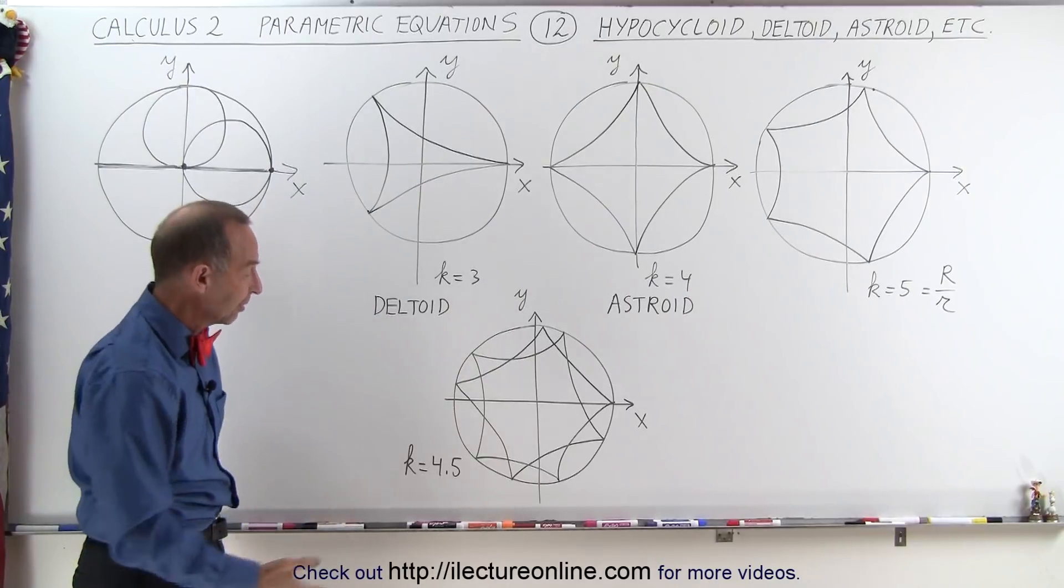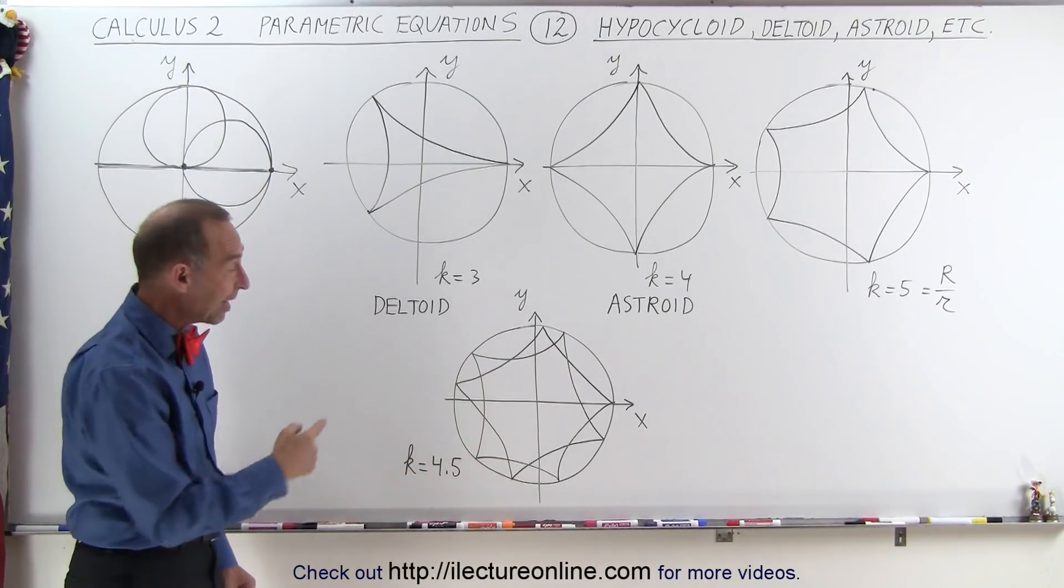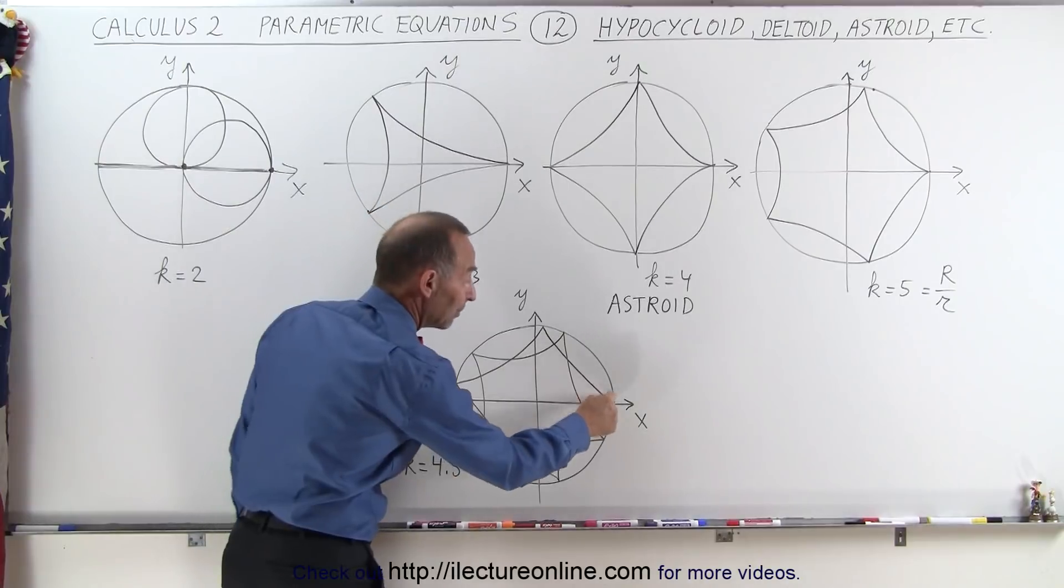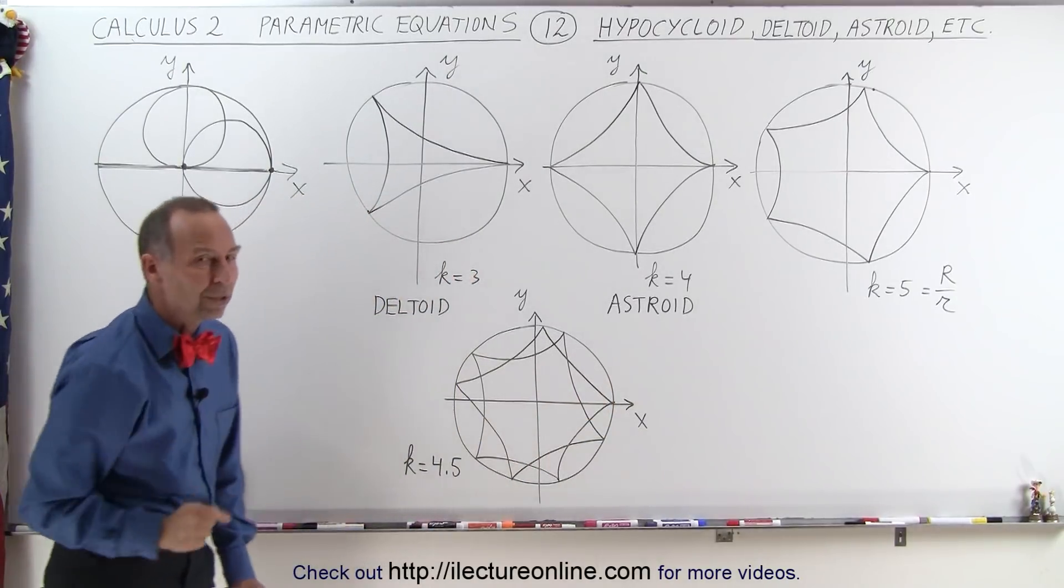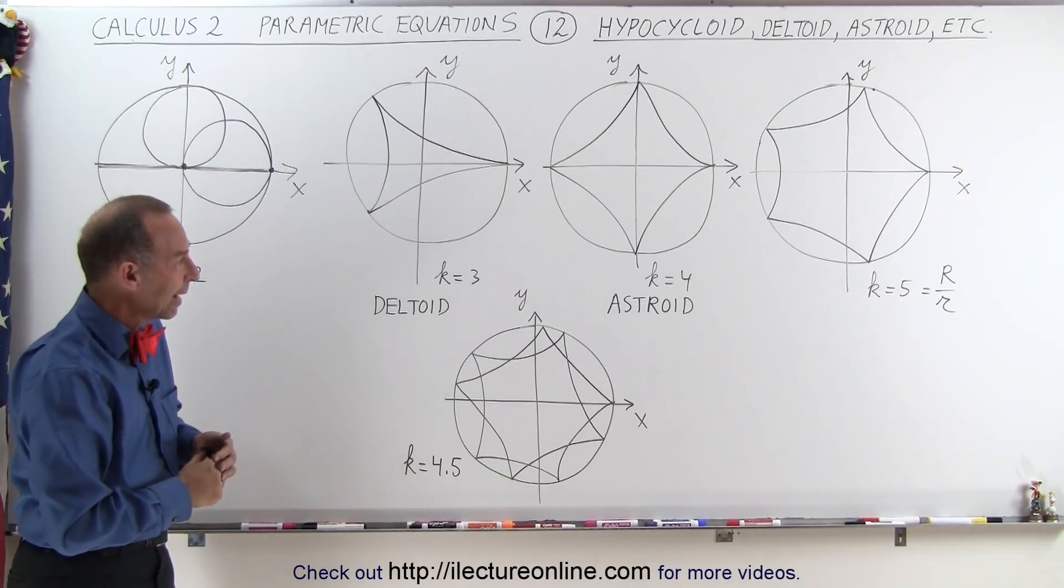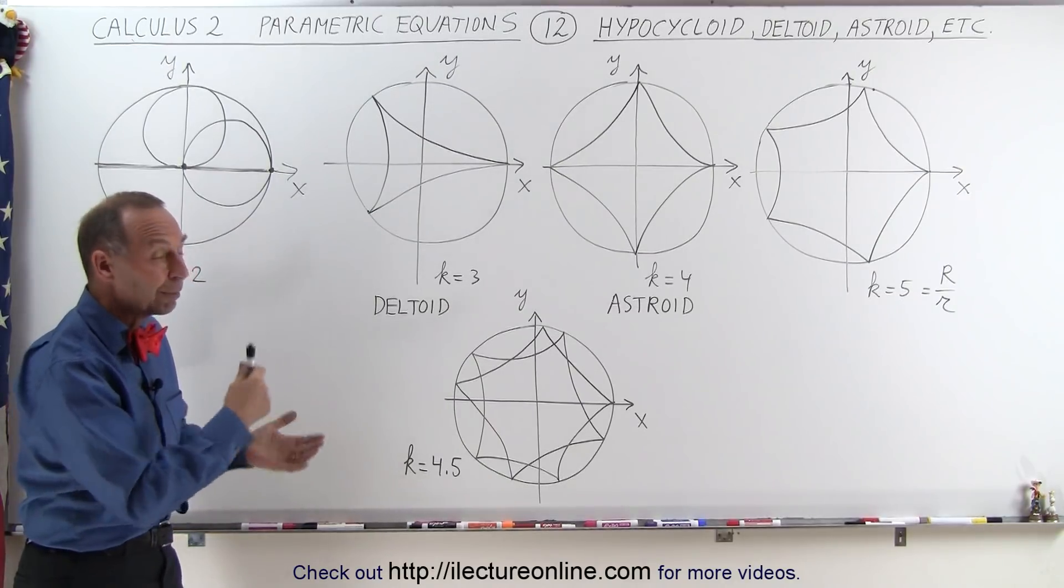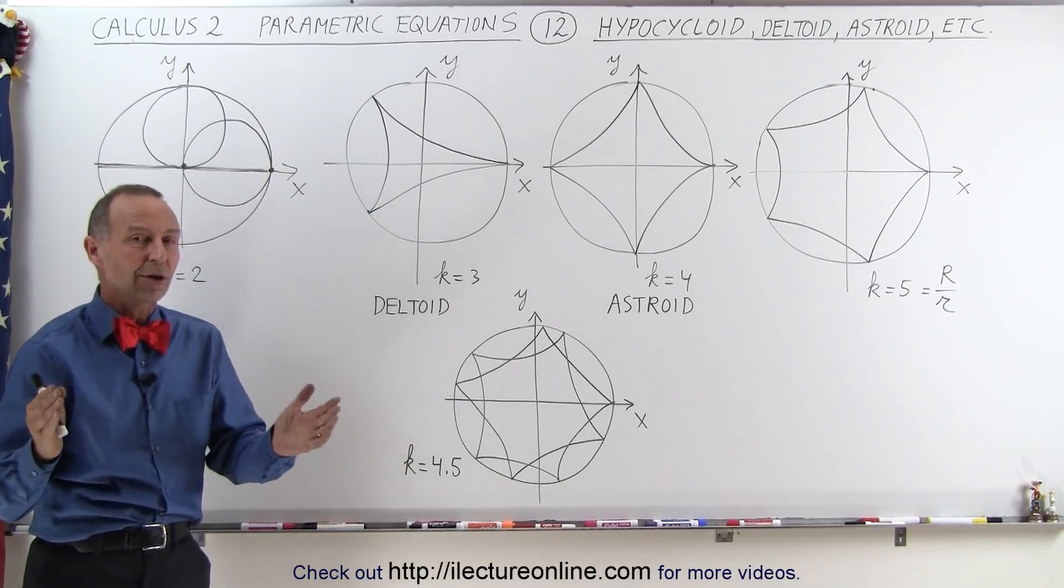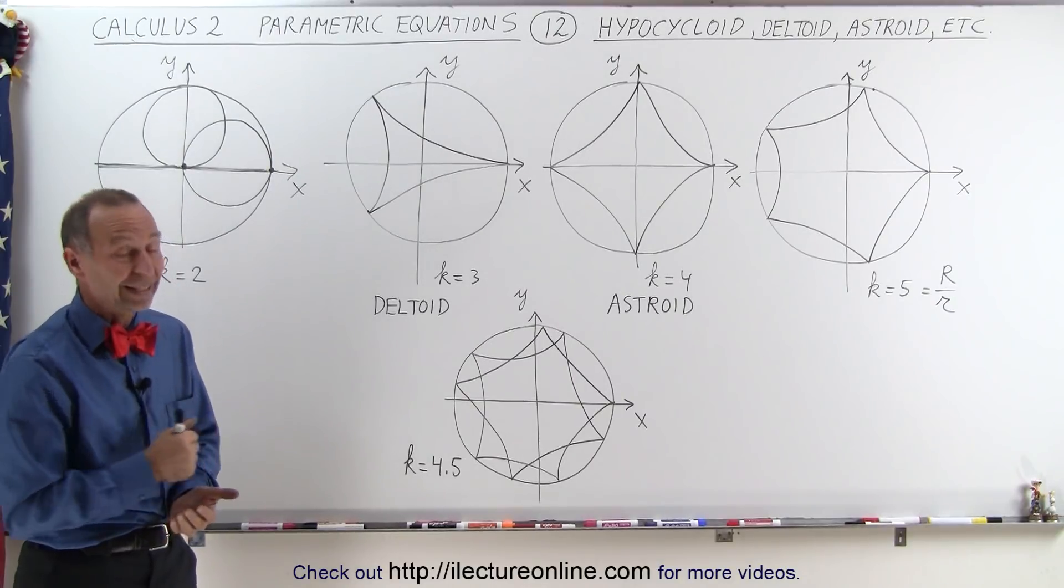And you can imagine that if it's, for example, 4.2, you'd have to go around five times before you end up back at the same place that you started with that point on the edge of the small circle. But here you get kind of a feel of what the various hypocycloids look like, depending upon what the ratio is between the large and the small circle. And that's how it's done.